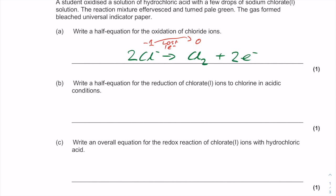If you scroll down, we'll have a look at a half-equation for the reduction of chlorate ions to chlorine in acidic conditions. A little bit more challenging this time. We need to remember what a chlorate ion is, so that's ClO⁻ and that's going to be reduced to Cl₂. Before we go any further we'll balance that up, so we'll stick a 2 in front of this one so we've got two chlorines on both sides.